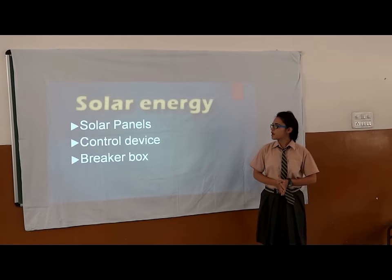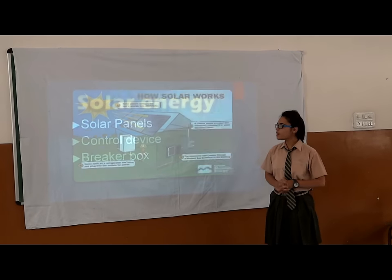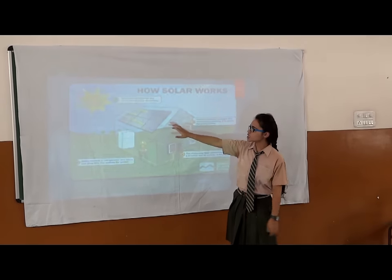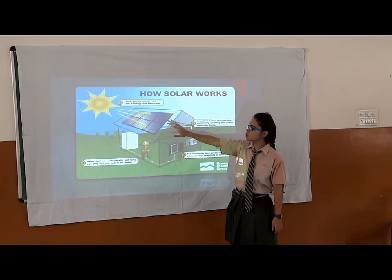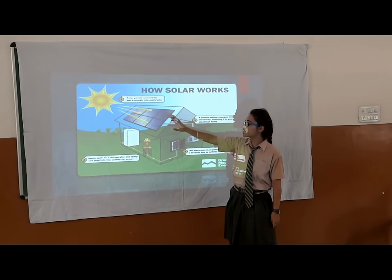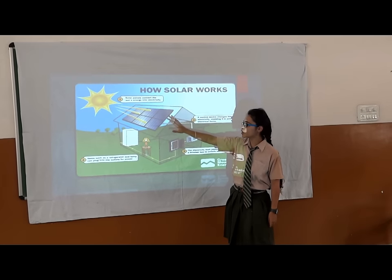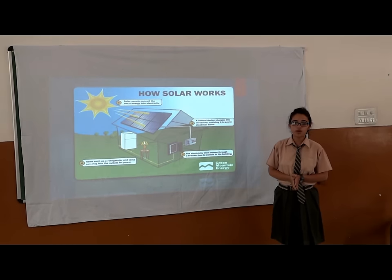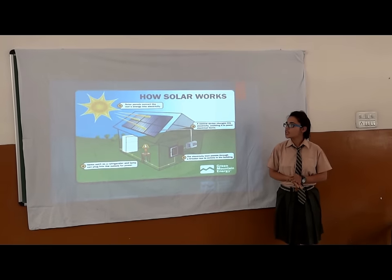Next is the solar power plants. In the solar power plants, the sun's rays will shine on the solar panels and then the sun's rays of energy get converted into electricity, and thus you can use this electricity to light up your house.